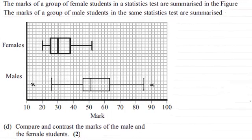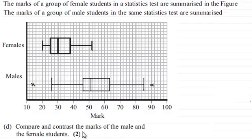Hi there. I've already updated the diagram with the box plot for the male students, their test marks plotted against the female's test marks. In part D, we've got to compare and contrast the marks of the male and the female students for two marks. That suggests that you've got to give two comments.